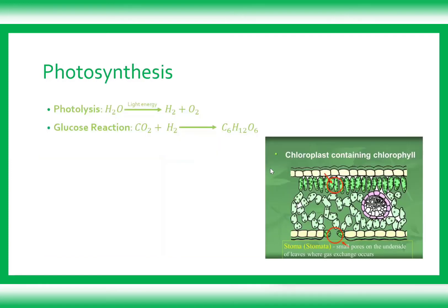In photosynthesis, we have two types of reactions: light reactions and dark reactions. The light reaction is known as photolysis — 'photo' means light and 'lysis' means breaking down. In photolysis, the water molecule under light energy is broken down into a hydrogen molecule and an oxygen molecule. That is the light reaction.